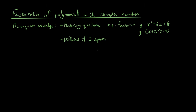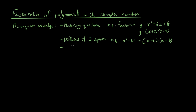The second prerequisite is you need to understand the difference of two squares formula. You should be able to understand why a squared minus b squared equals a minus b times a plus b. If you don't understand how to go from one form to the other, you probably need to know that before doing this tutorial.